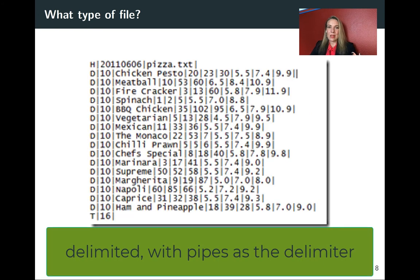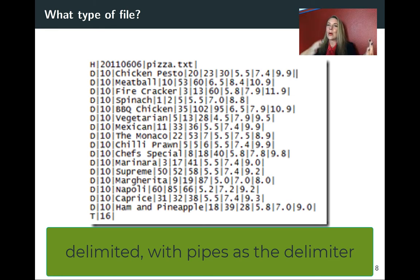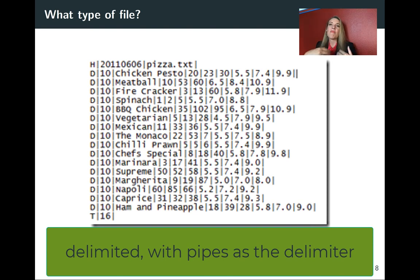This next one — we're back to a delimited file again. In this case, the delimiter is the pipe symbol. That can be useful because it's very rare to find it in common text. There was one data analysis project I worked on where we ended up using pipes because we had the names of Supreme Court cases and petitioners, and a lot of the names had commas or ampersands — all kinds of symbols that made it hard to use other delimiters. A pipe is rare enough in text that it's often helpful.